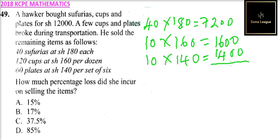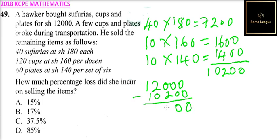We can add this to get the amount sold, which you get is 10,200. So if you subtract that from 12,000, that is 12,000 minus 10,200, you'll be able to get that is 1,800.